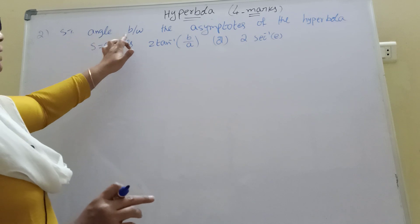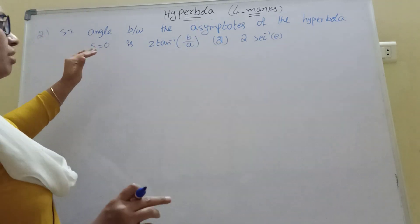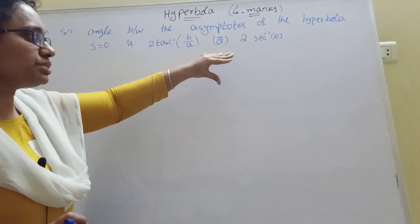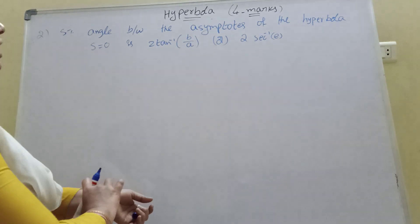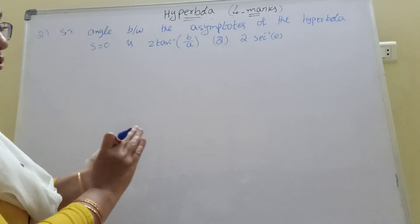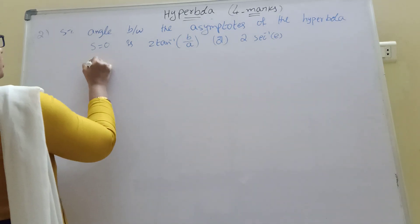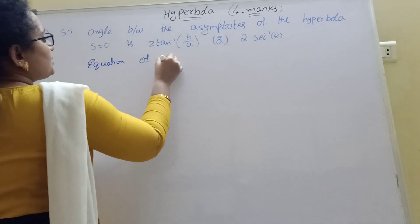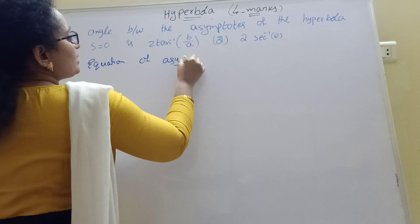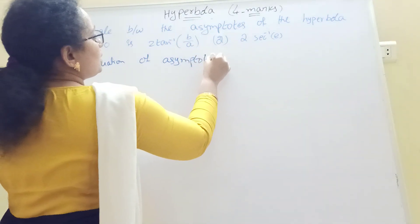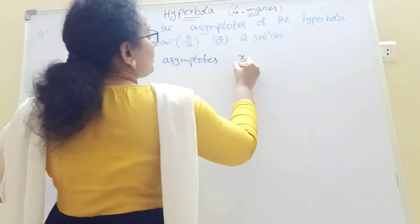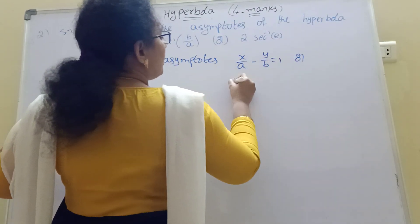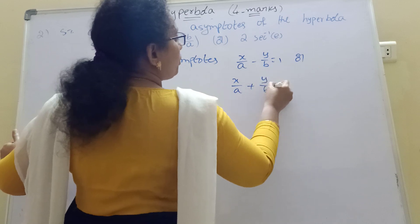Now the second problem. I am going to show that the angle between the asymptotes of the hyperbola is 2 times sec⁻¹(e), or equivalently 2tan⁻¹(b/a). The equation of the asymptotes of the hyperbola: bx minus ay equal to 0 and bx plus ay equal to 0.